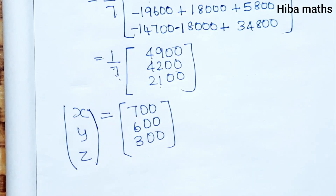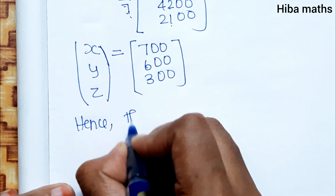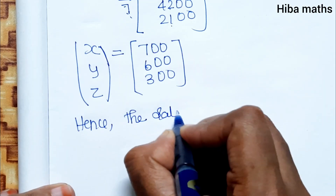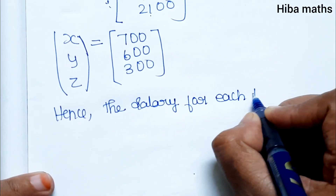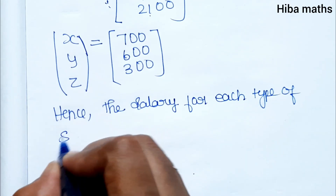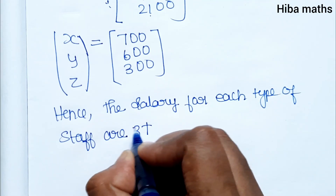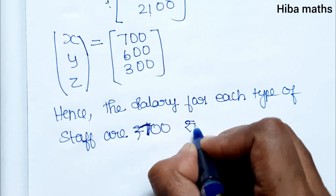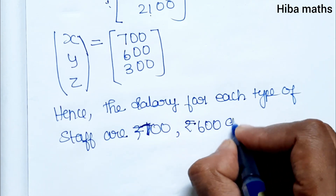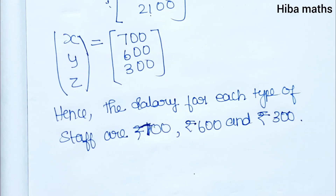So x, y, z values are found. Hence the salary for each type of staff: x = ₹700, y = ₹600, and z = ₹300. For any other doubts, please ask in the comment section. Thank you so much for watching.